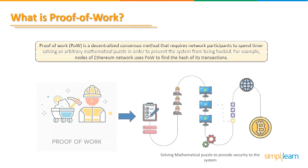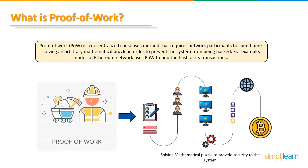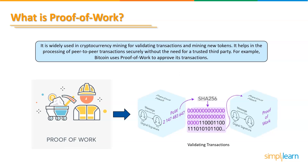Proof of work is a decentralized consensus method that requires network participants to spend time solving an arbitrary mathematical puzzle in order to prevent the system from being hacked. It is widely used in cryptocurrency mining for validating transactions and mining new tokens. It helps in processing peer-to-peer transactions securely without the need of a trusted third party, but requires a huge amount of energy at scale, which only increases as more miners join the network.